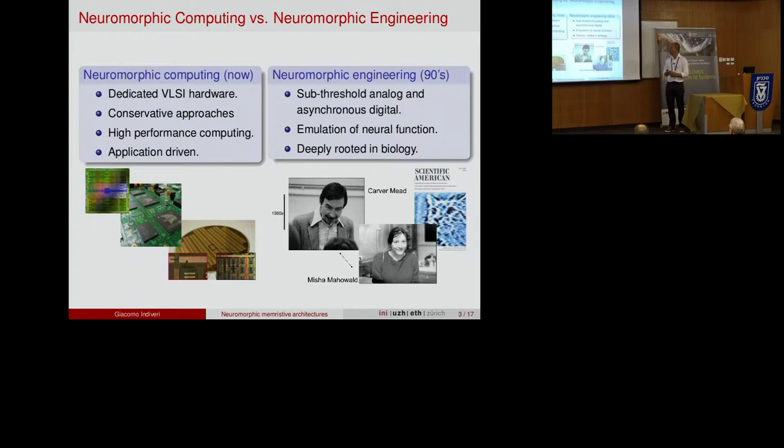There is a lot of interest in doing applications for deep networks, convolutional neural networks, and even GPUs are starting to be denoted as neuromorphic computing platforms. It became very popular, but the whole field actually started many years ago in the late 80s and mid 90s with Carver Mead and Mischa Mahowald.